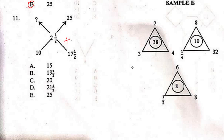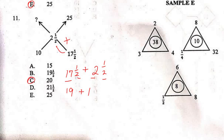For Question 11, what is missing is the addition result. This plus this: 17½ plus 2½. 17 + 2 = 19, and ½ + ½ = 1, so 19 + 1 = 20. The right answer is C.